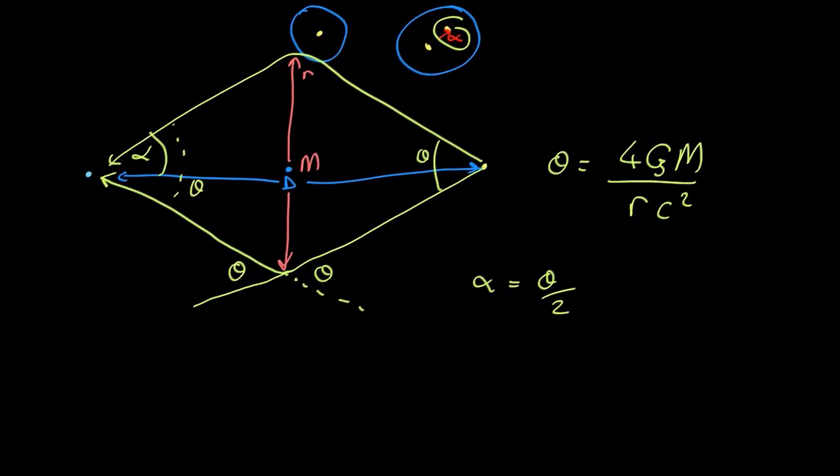We also know that this right angle triangle here, tan theta equals opposite over adjacent, which is r over half d. Sorry, that should be tan theta over 2, tan alpha. Because the angles are very small, as long as we measure everything in radians, we can get rid of the tan. So theta over 2 equals r over d over 2. So r equals theta d over 4.